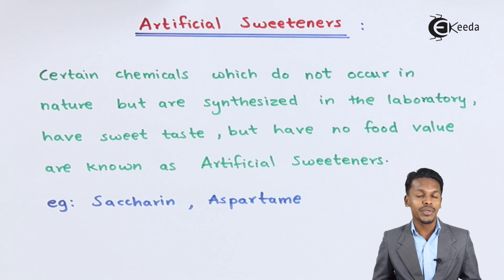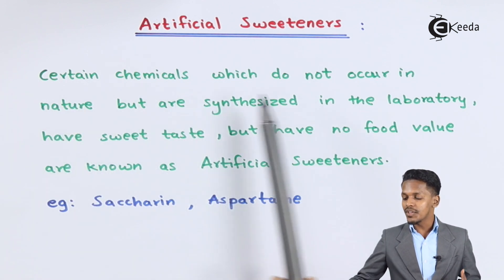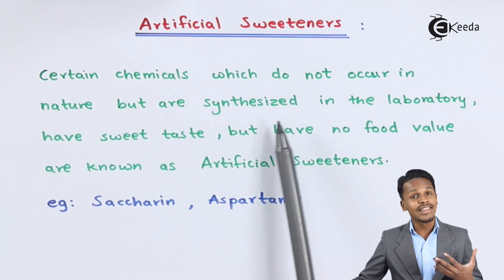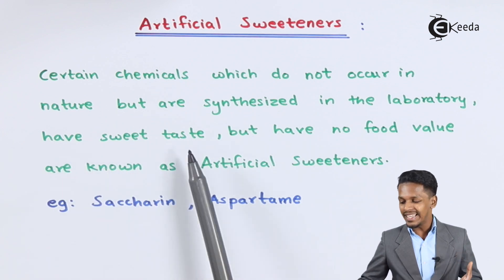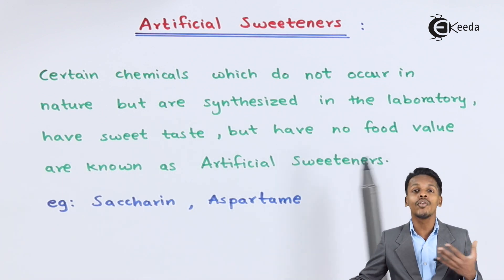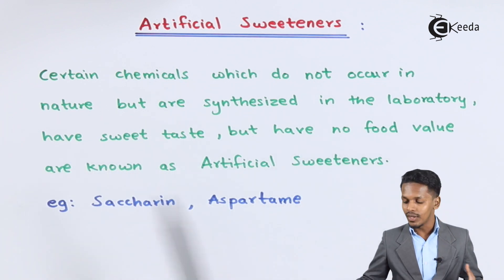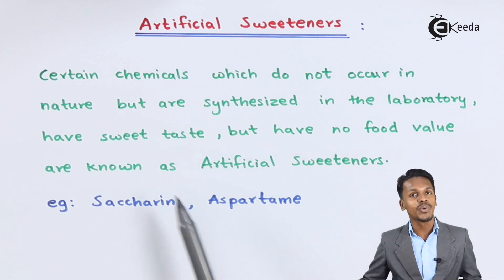Now let us understand the definition of artificial sweeteners. These are certain chemicals which do not occur in nature but are synthesized in laboratory, having sweet taste but have no food value—no calorific value—and are basically known as artificial sweeteners.